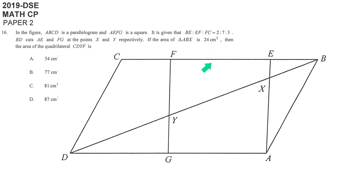They tell you that BE to FE to FC is 2 to 7 to 3. So we may let this one be 2k and then 7k, 3k. And then they say that BD cut AE and FG at point X and Y respectively. They mean these two points. Area of ABX, they give you this triangle. It's not right angle triangle. So, 24 here. And then they say to find out the area of C, D, Y, F. So our key point is what is this stuff.